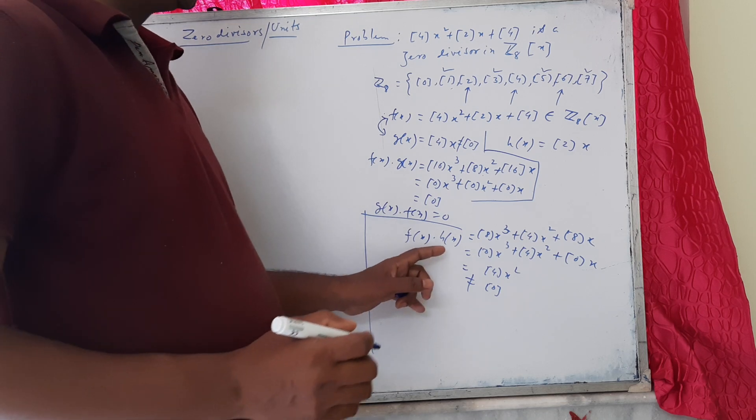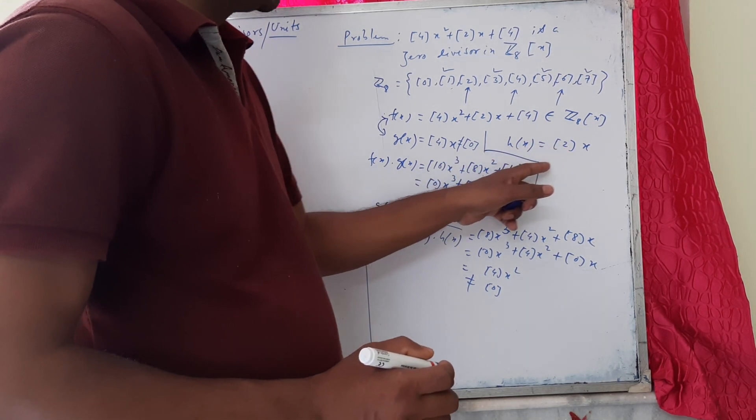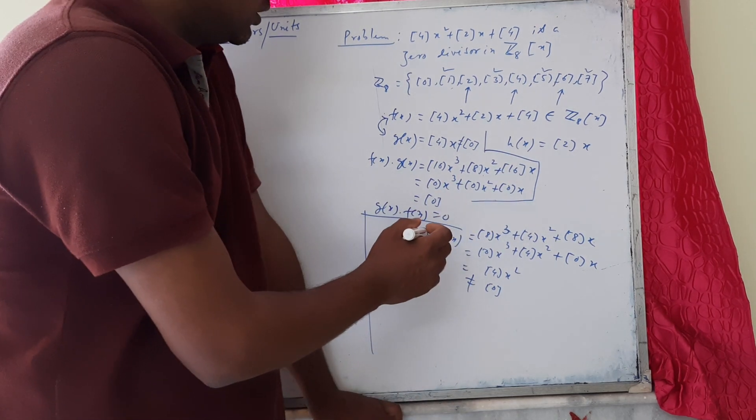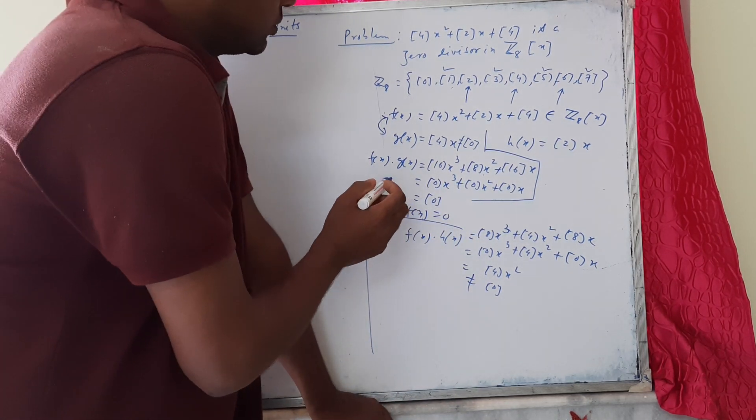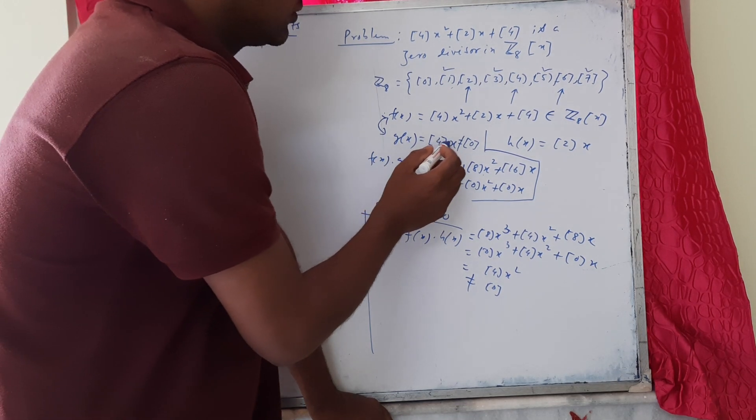Thus, in this case, the polynomial we have chosen, h(x) = class 2x, is not working. We have to take g(x) to be class 4x.